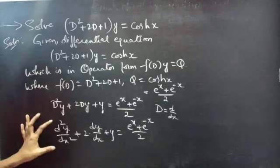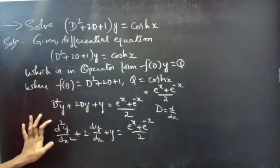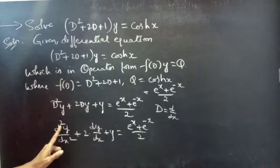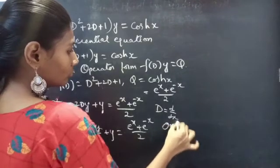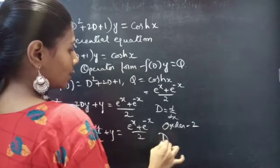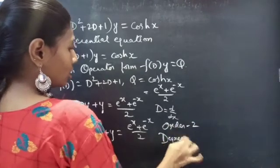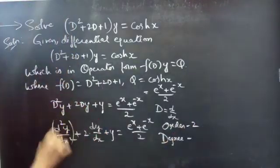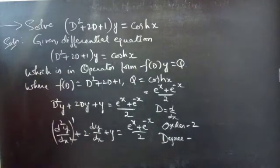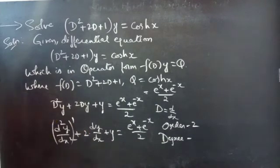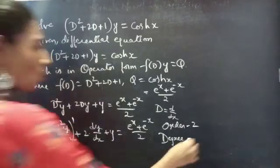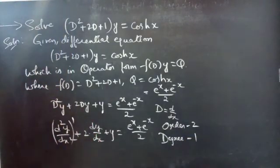Now, identify the highest derivative: d²y/dx² is our highest derivative. So the order of the equation is 2. The degree is the highest power of the highest derivative, so here our degree is 1.